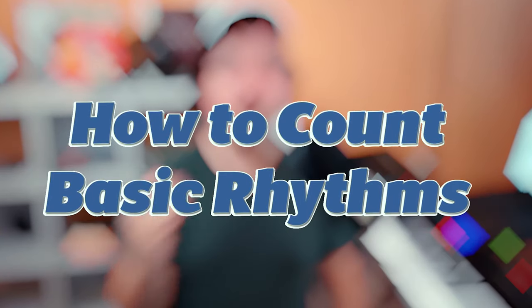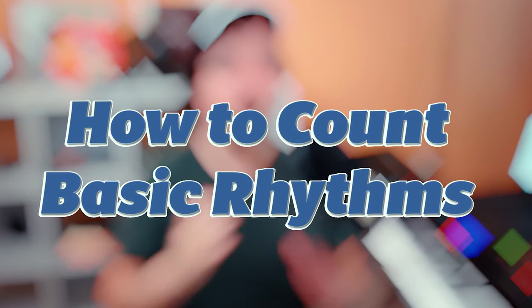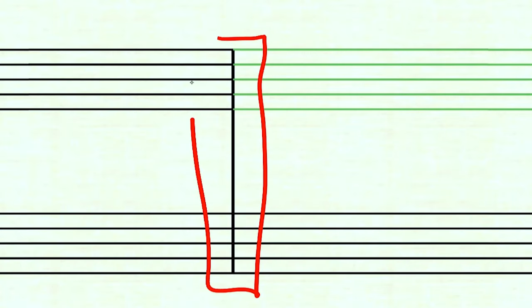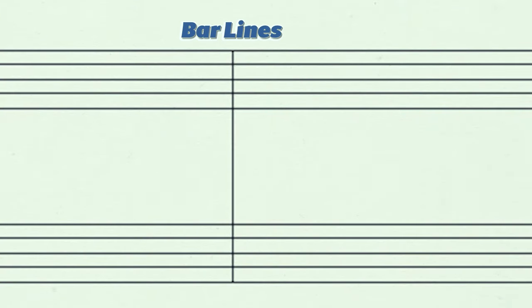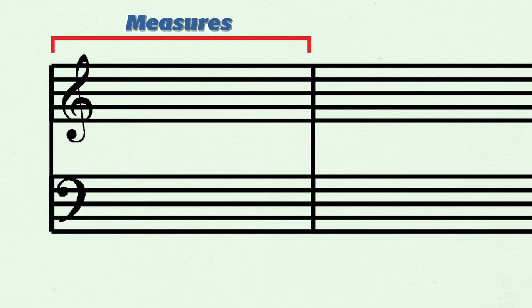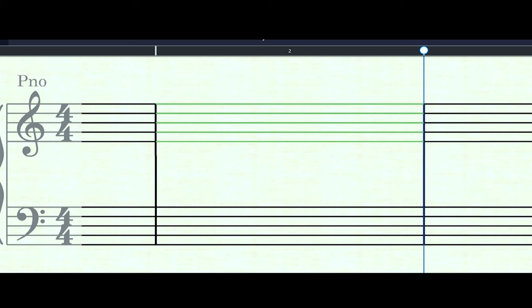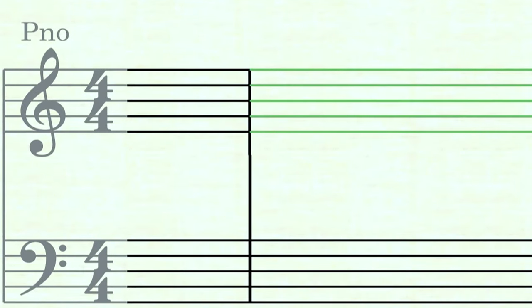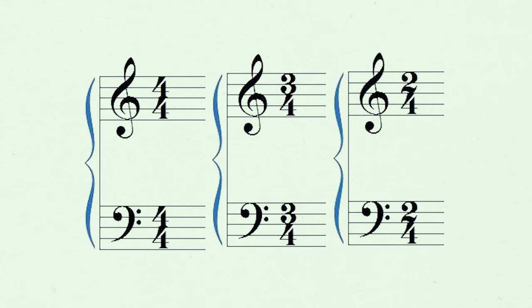Today, I'm going to explain how to count basic rhythms in the most simple and clear way possible. The first thing I want you to notice is how music is broken up into these vertical lines called bar lines. Each of these lines helps break music up into boxes called measures. Each of these boxes or measures can fit a specific number of beats, which is illustrated by the top number of the time signature.